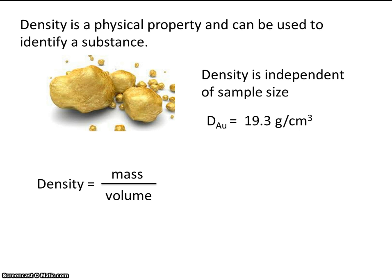Archimedes was a guy who lived about 2000 years ago. At the time, there was a king who hired a goldsmith to make a crown for him. When the goldsmith returned the crown, the king suspected he had been cheated. The goldsmith could have alloyed the gold with cheaper metals like copper, or kept some gold for himself and replaced it with copper. The king wanted to know if he was cheated, so he hired Archimedes to determine if the crown was solid gold or had been adulterated in some way.